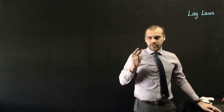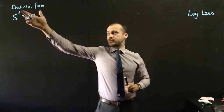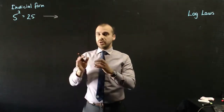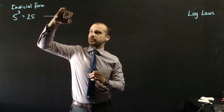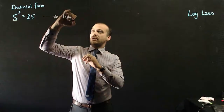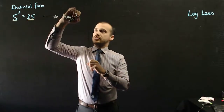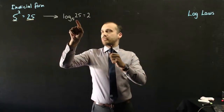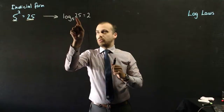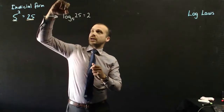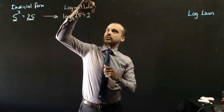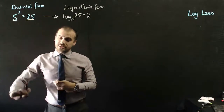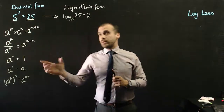So I'm going to try to get through log laws really quickly. You've probably seen something like this: 5 squared equals 25, written in indicial or exponential form. I can write it in logarithmic form by doing the following — log base 5 of 25 is equal to 2. That really says the answer to 5 to the 2 is 25, so it's just another way of writing that, and we call that logarithmic form. Just like we have some index laws, we have some log laws as well.